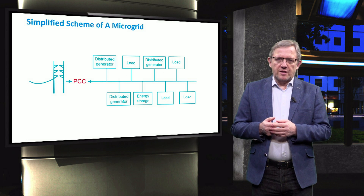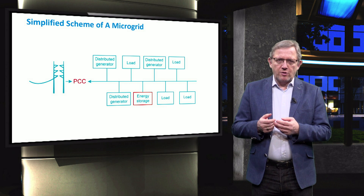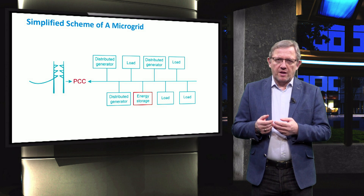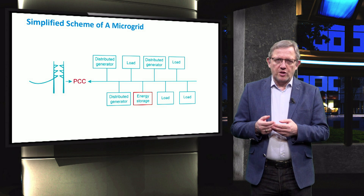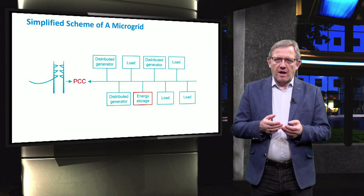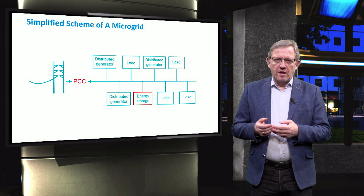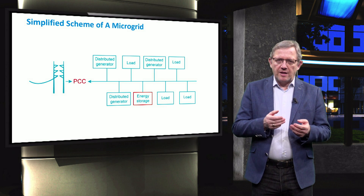The figure shows a simplified scheme of a microgrid which consists of distributed generators, loads and energy storage. Some of the generators are based on renewable energy sources, meaning the amount of generated power cannot be accurately controlled since it depends on uncontrollable factors like the weather, wind and solar conditions. Energy storage devices can improve the reliability and efficiency of those generators by storing or providing the power imbalance between the loads' demand and the renewable power sources' capability. In addition, it provides the energy requirements for seamless transition between grid-connected and island operation modes.